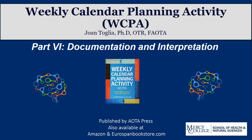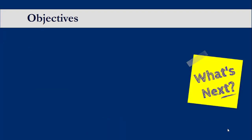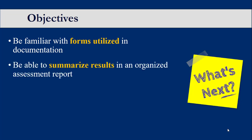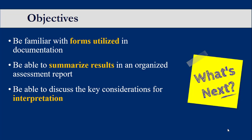The following presentation will discuss documentation and interpretation of the Weekly Calendar Planning Activity Assessment Tool. This module follows the Parts 1 through 5 training videos and should be used in conjunction with the WCPA Manual. This module will review documentation including forms utilized, information to be summarized, as well as considerations for interpretation, followed by a case illustration.